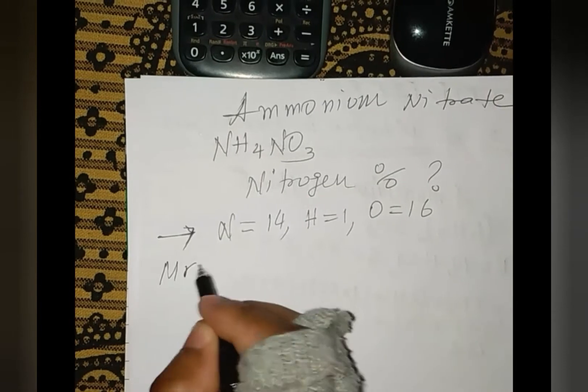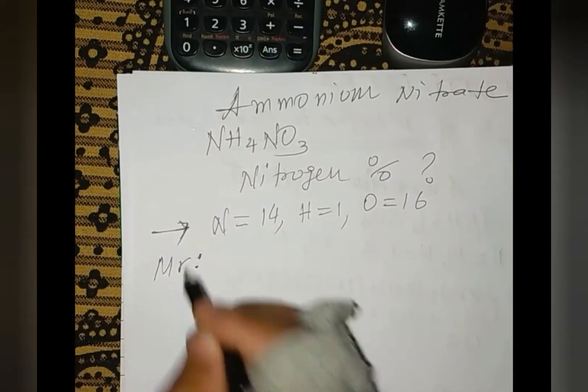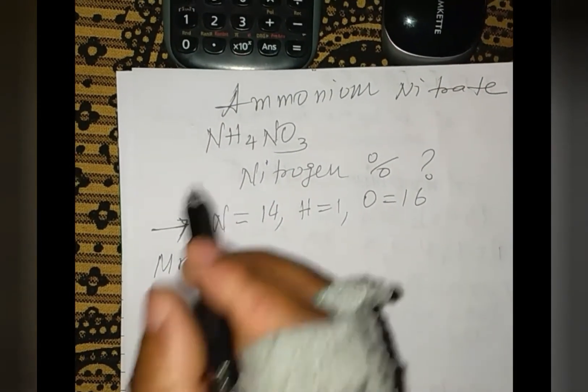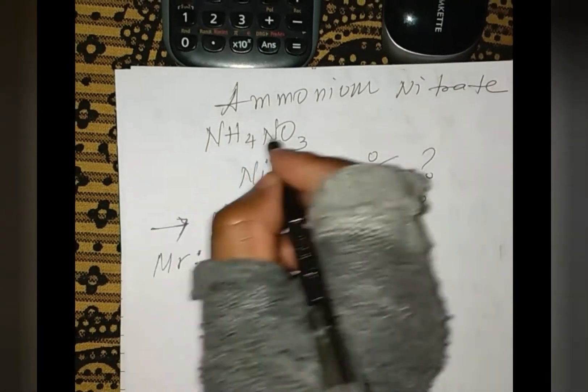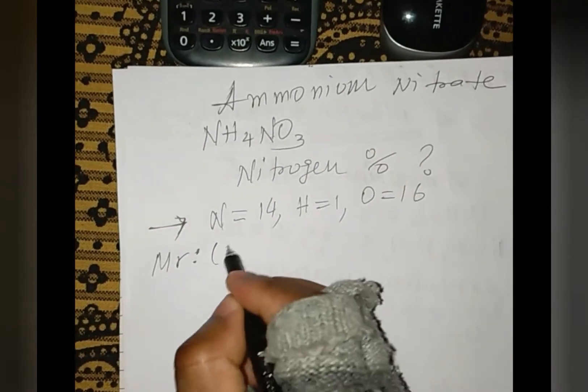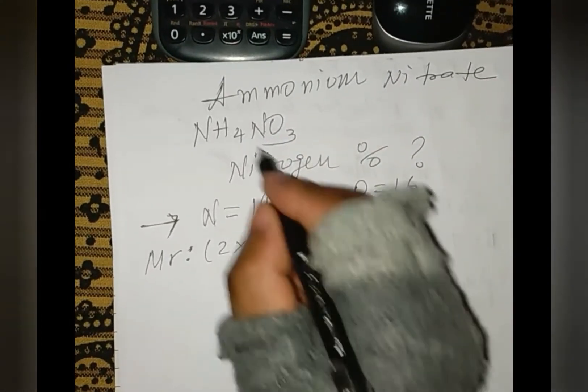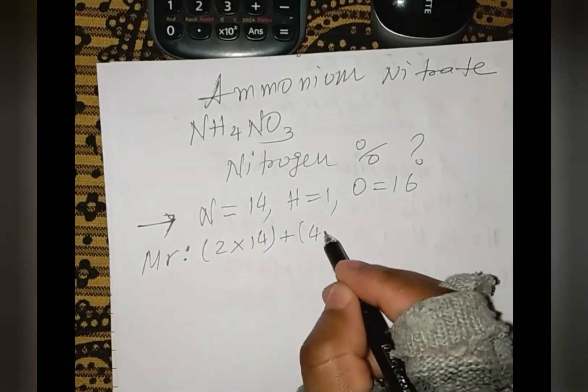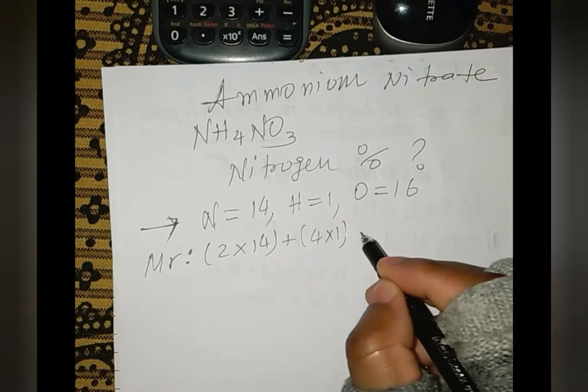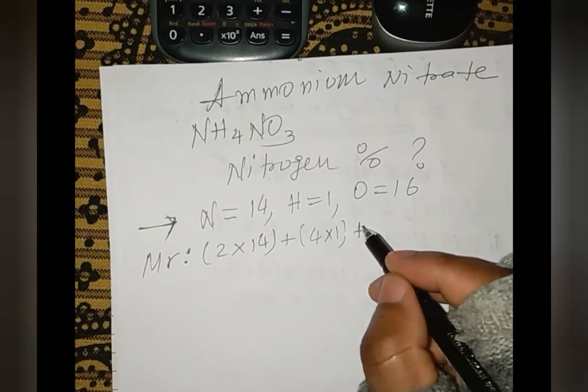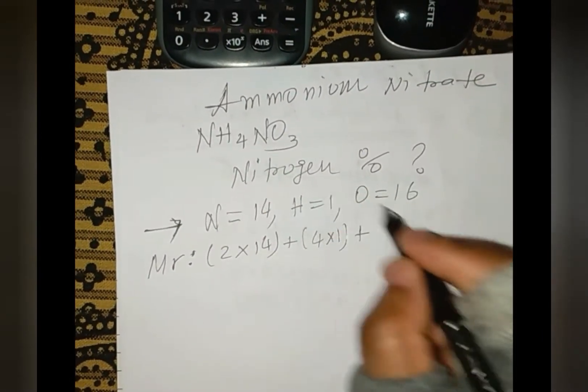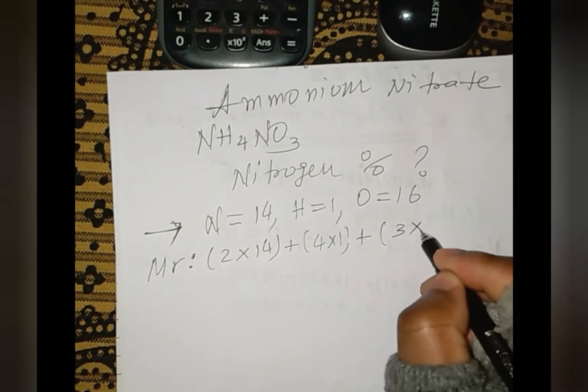First, we have to write the average atomic mass. How many atoms do we have? There are two atoms of nitrogen, so two times the mass number which is 14. For hydrogen, there are four, so four times one. For oxygen, there are three, so three times 16.